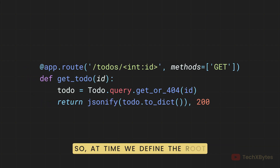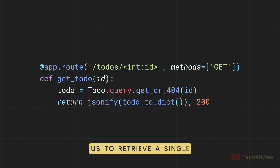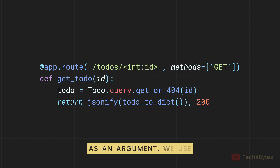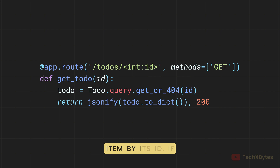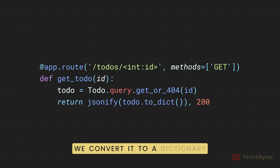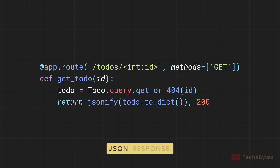Next, we define the route for getting a specific to-do by ID. This route allows us to retrieve a single to-do item from the database based on its unique ID. The id parameter in the URL is captured and passed to the get_todo function as an argument. We use the get_or_404 method to retrieve the to-do item by its ID. If the to-do item is not found, this method will return a 404 error response. If found, we convert it to a dictionary using the to_dict method and return it as a JSON response.